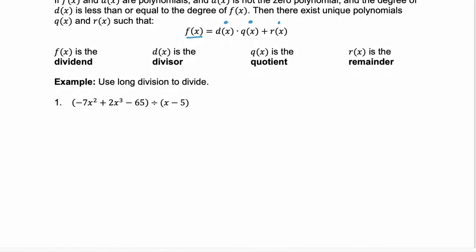First, we're going to use long division. Long division of a polynomial looks just like long division of our everyday numbers. The key thing is your polynomial has to be rewritten in descending order. So notice here we have x squared before x cubed. We need to rewrite that as 2x cubed minus 7x squared.